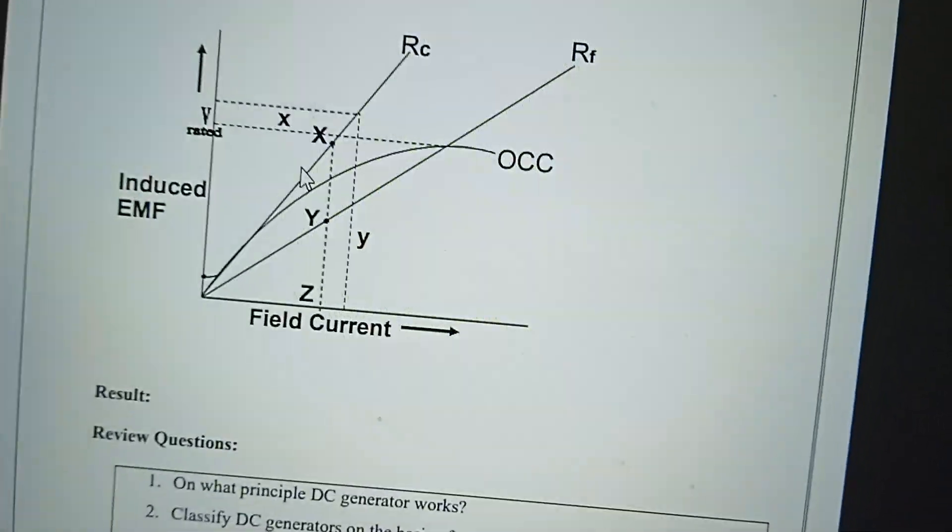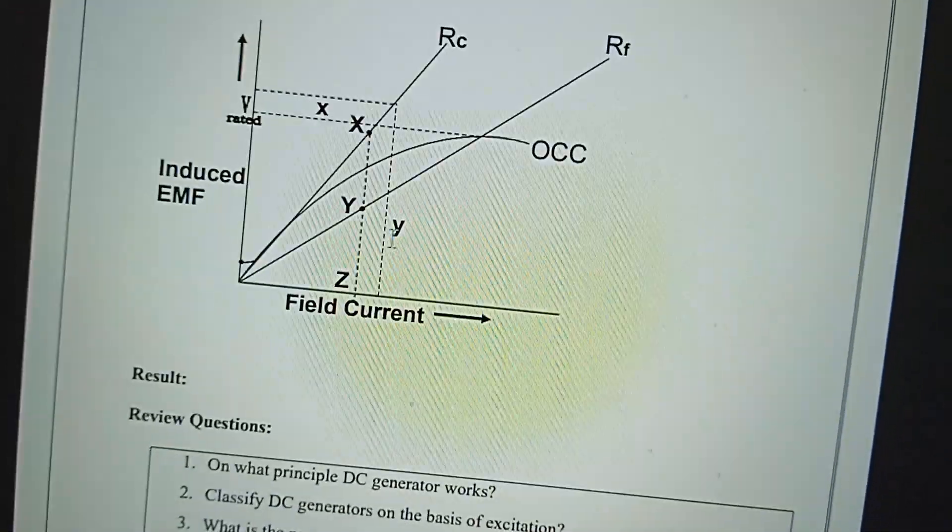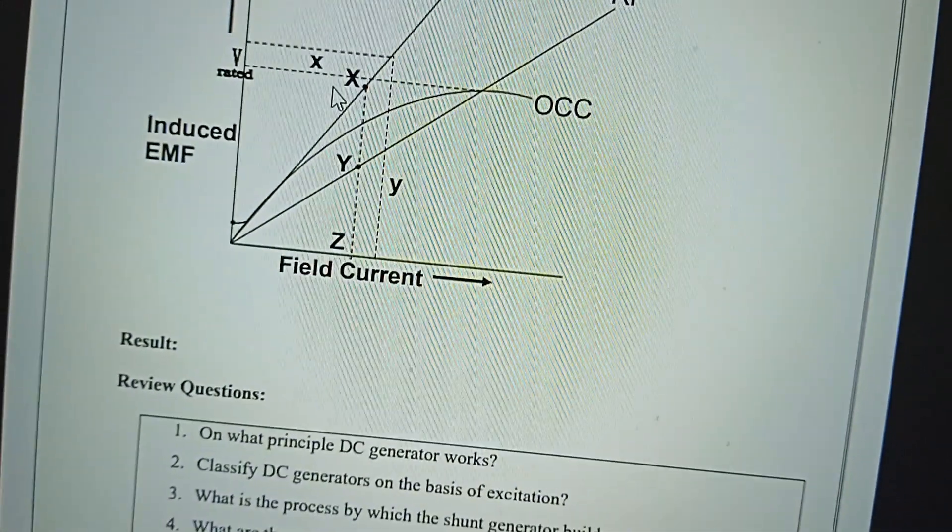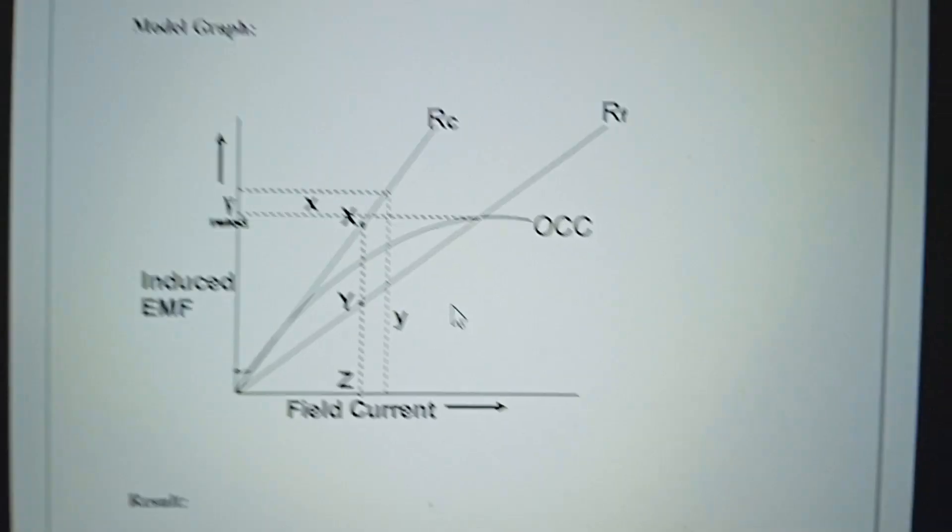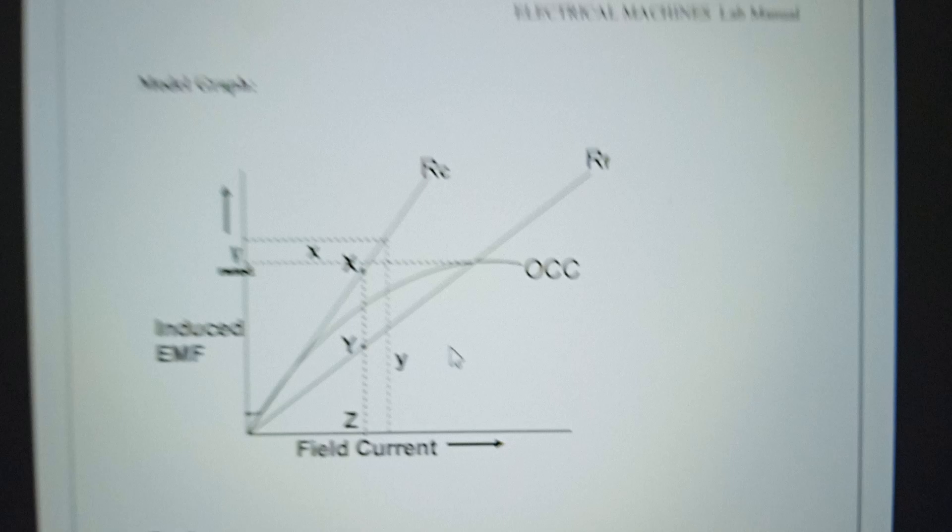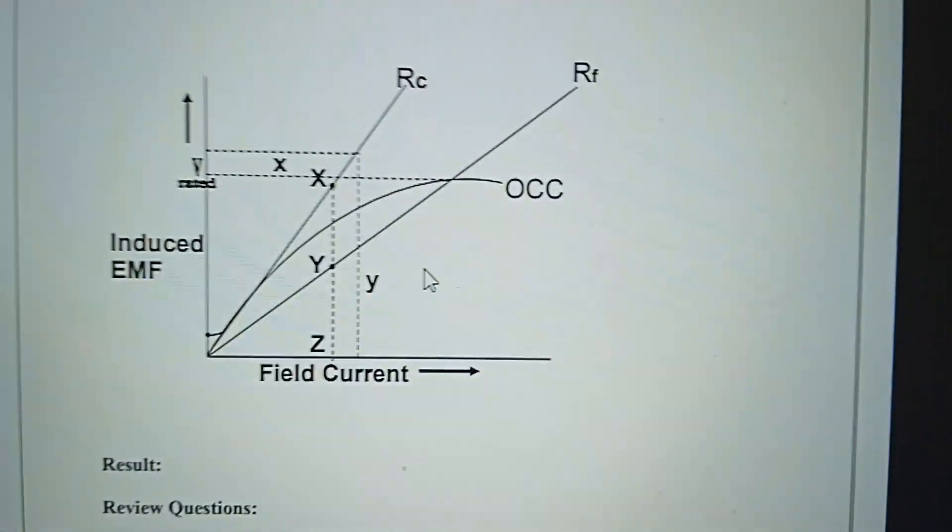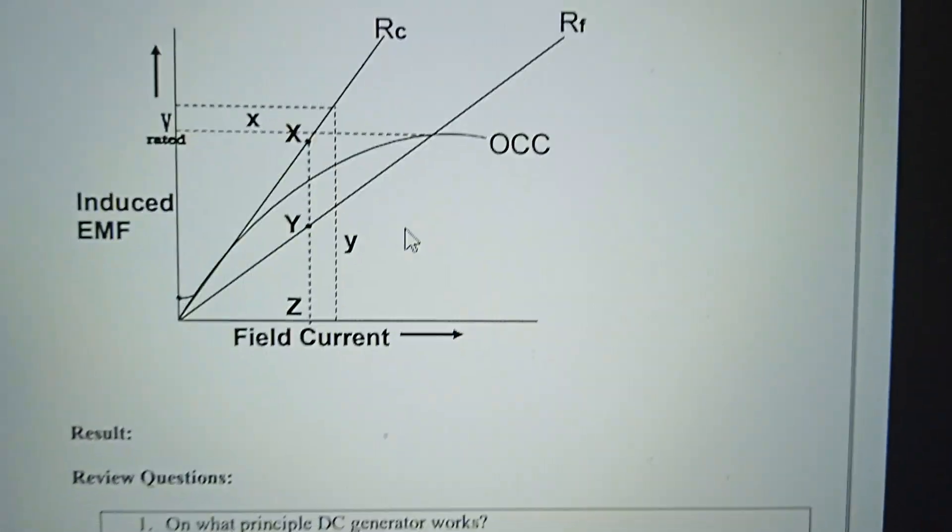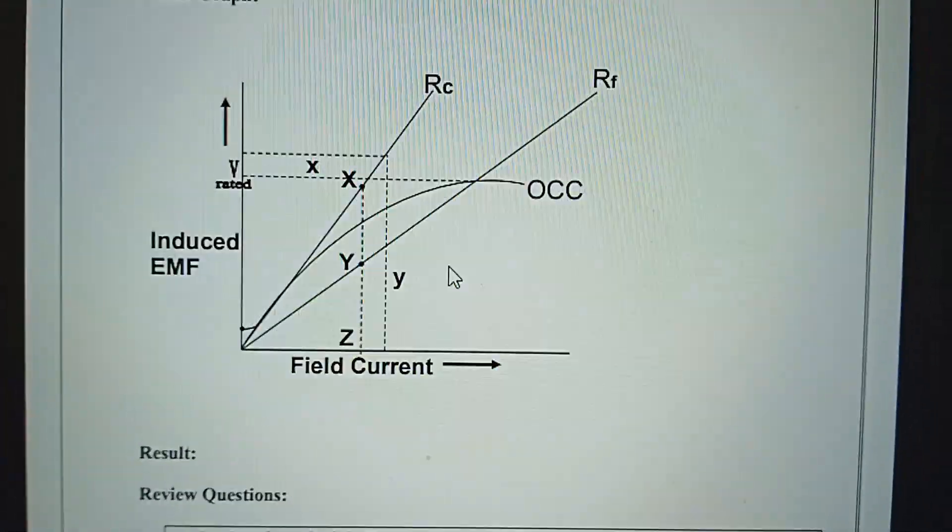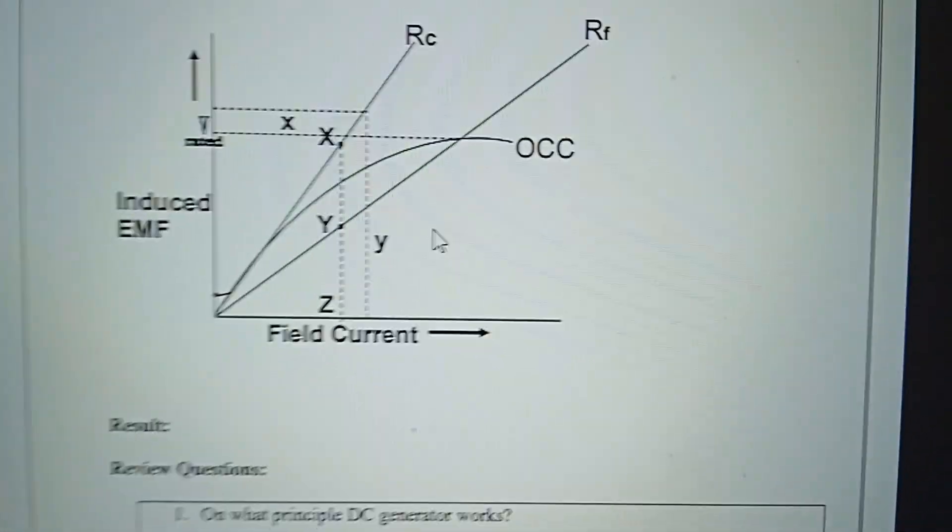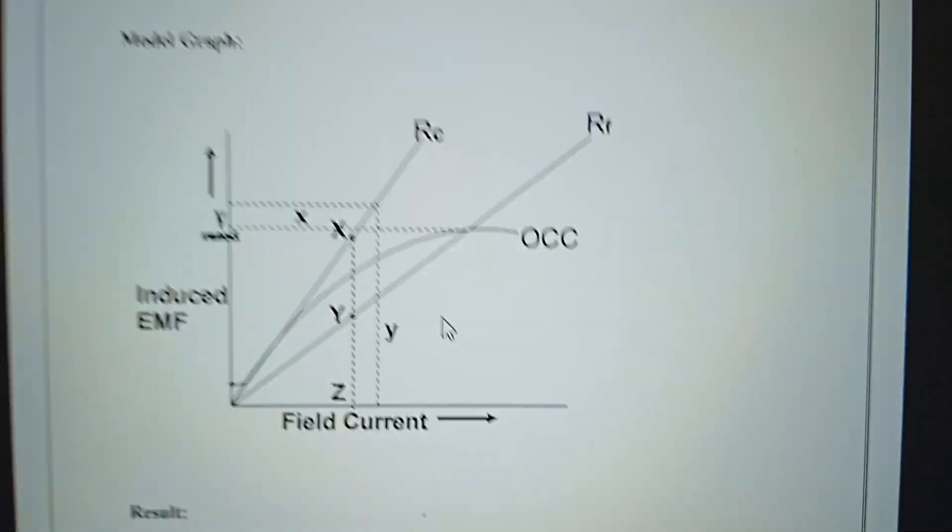YZ divided by XZ into rated speed is critical speed. Critical speed is minimum speed. This speed is the minimum speed for EMF generation. We are starting to get the EMF generation at this minimum speed.